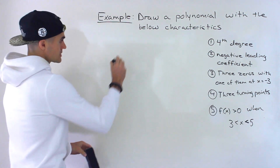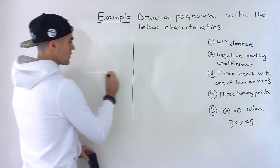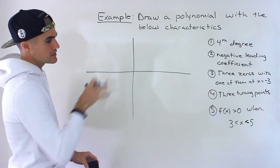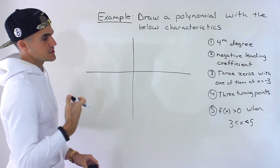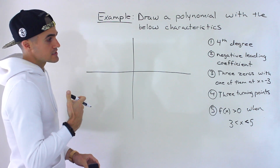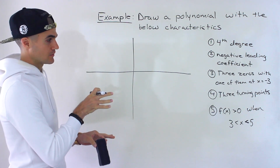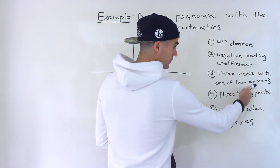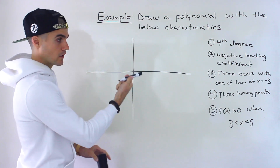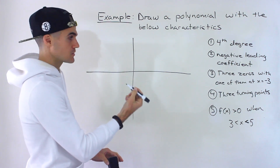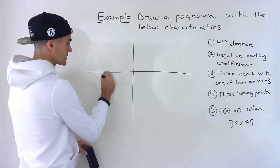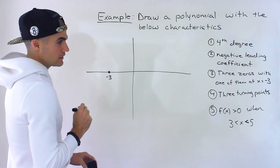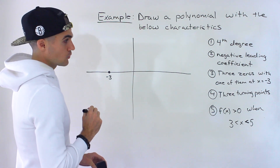With these kinds of questions there's no specific way to go about it — it really depends on the characteristics that are given. Personally what I like to start with is any points that are given, and notice that in this case we are given a point. We're told there are three zeros, and one of them is for sure going to be at x equals negative three, which means that's going to be an x-intercept. And really that's the only point that we have to work with.